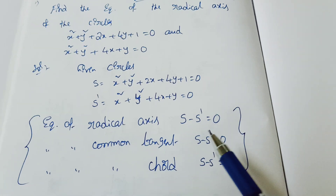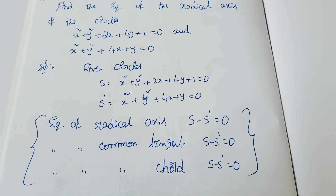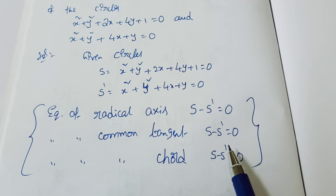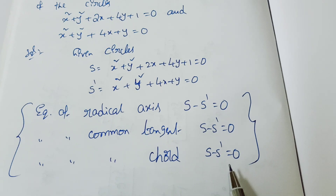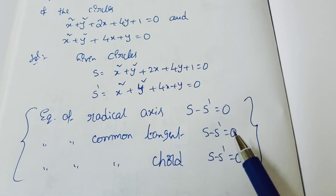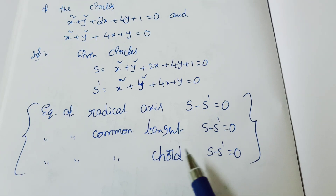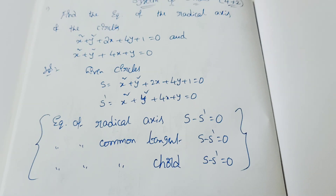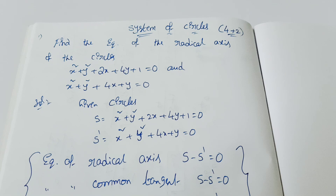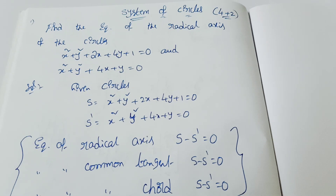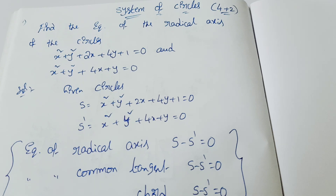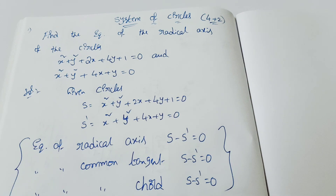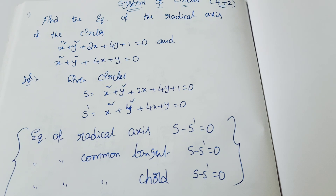The radical axis is S minus S dash equal to 0. The equation of the common chord uses the same formula, and the equation of the common tangent also uses the same formula. So for any of these three — radical axis, common chord, or common tangent — the answer is compulsorily S minus S dash equal to 0. For two-mark questions, this is easy: just subtract the two circles.